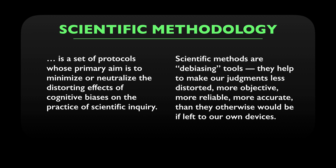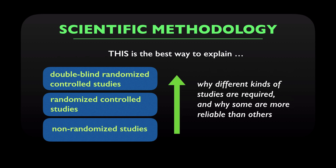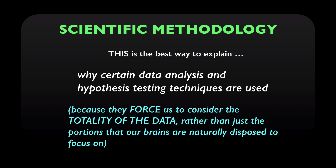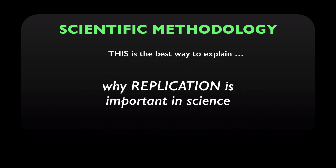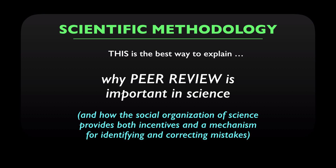These protocols are de-biasing tools. They help to make our judgments less distorted, more objective, more reliable, more accurate than they otherwise would be if left to our own devices. In my view, this is the best way to explain why controlled studies are important for science, and why randomized controlled studies are superior to non-randomized studies, and blind randomized controlled studies are even better, and why double-blind and sometimes triple-blind randomized controlled studies may be necessary to screen off certain kinds of biases and errors. This is the best way to explain why certain data analysis and hypothesis testing techniques are used — because they force us to consider the totality of the data rather than just the portions that our brains are naturally disposed to focus on. This is the best way to explain why replication is important in science, and how confidence in a result can build over time as studies and experiments from different labs converge on the same result. This is the best way to explain why peer review is important, and how the social organization of science provides both incentives and a mechanism for identifying and correcting mistakes.